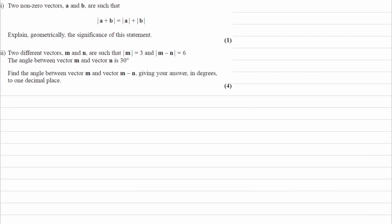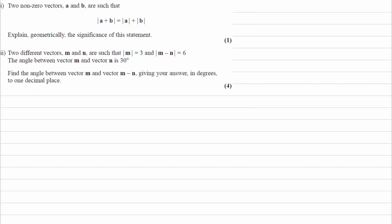We have two non-zero vectors, a and b, such that the magnitude of a plus b is equal to the magnitude of a plus the magnitude of b. We're trying to explain geometrically the significance of this statement. This is quite an abstract question — we're not given any numbers or any directions, just this equation, and we're expected to figure out a property between these two vectors.